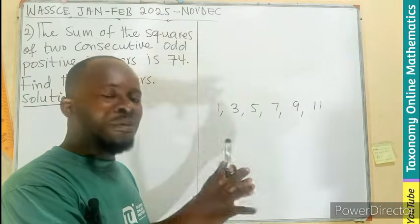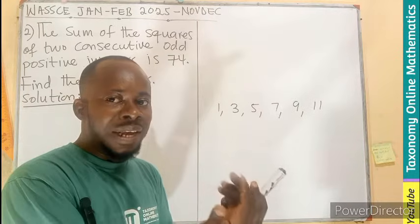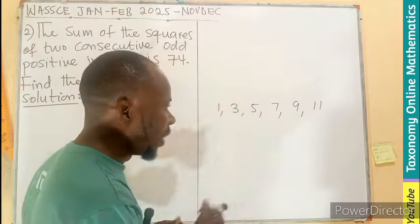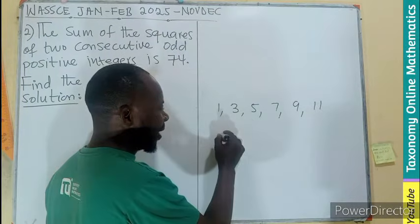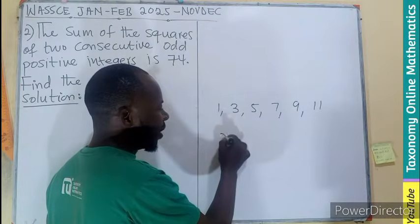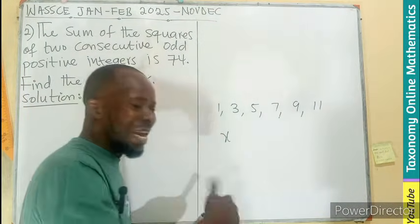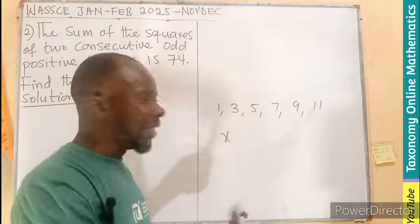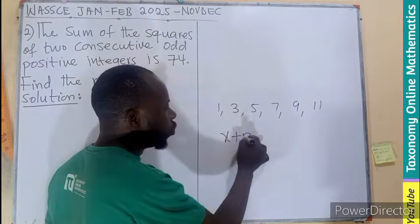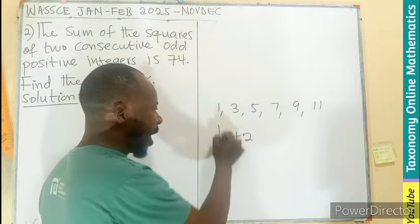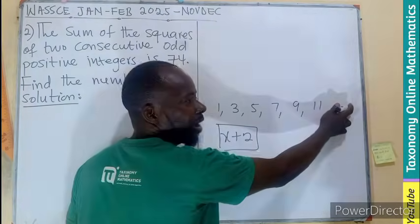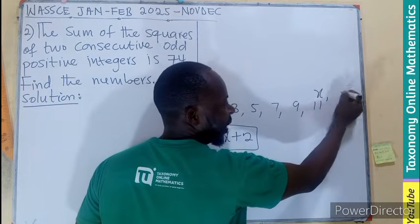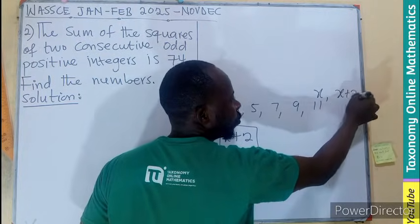We have to represent the number we are thinking of as the odd integer using a variable. So let's say if 11 in my mind is X. What will be the next number? The next number after 11 will be 13 — I add 2 to get 13. So this becomes X, and the next number will be X plus 2.